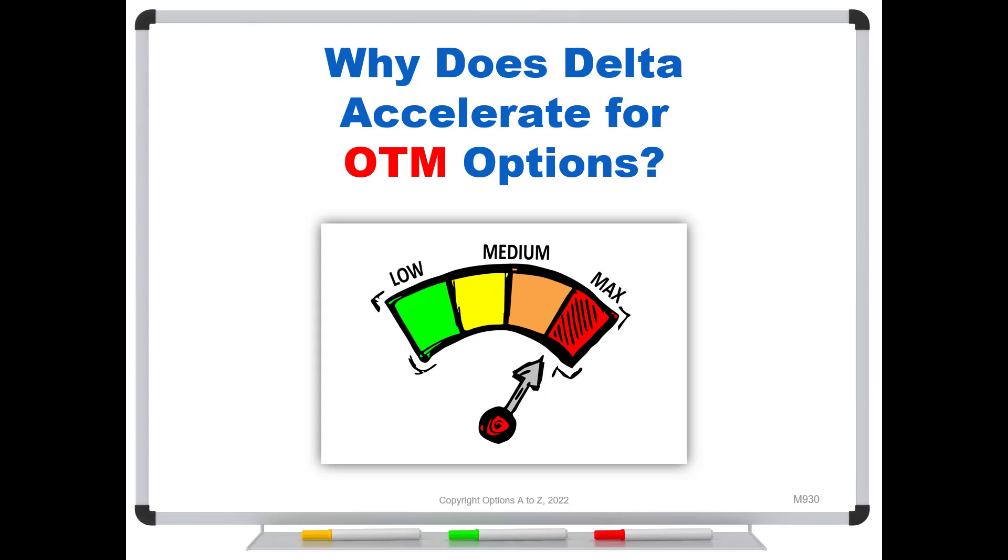Hey, welcome back once again, Options Traders. Well, a question that I get a lot from traders is why does the delta accelerate for the out-of-the-money options? Now, traders don't often phrase the question this way, but this is really what they're asking about.